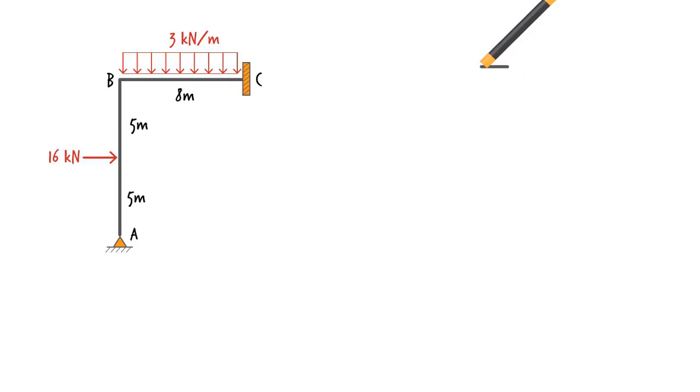Consider this frame. Member AB is subjected to a concentrated load at its midpoint. In the local coordinate system, the fixed end forces for the member are calculated. In vector form, this can be written as shown.